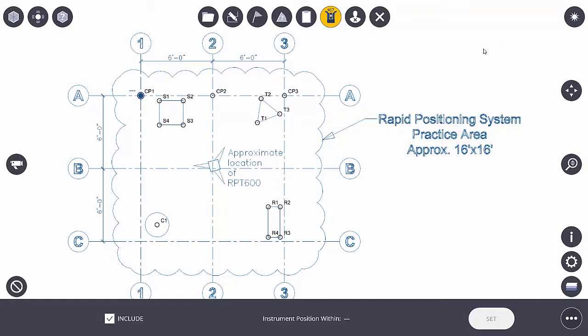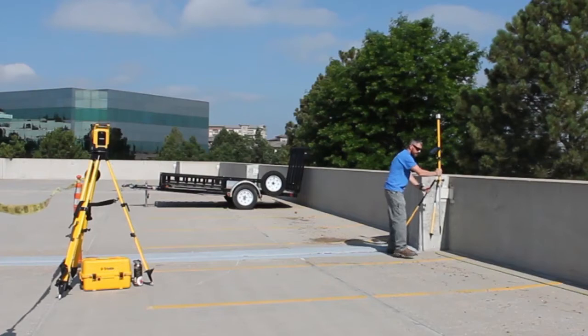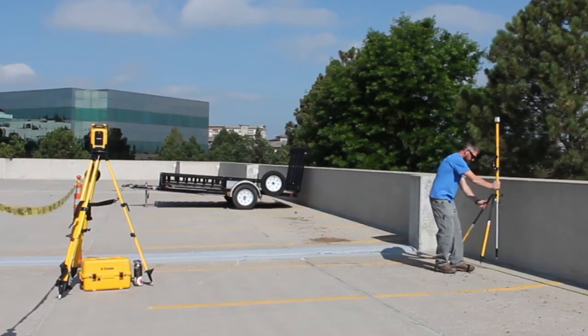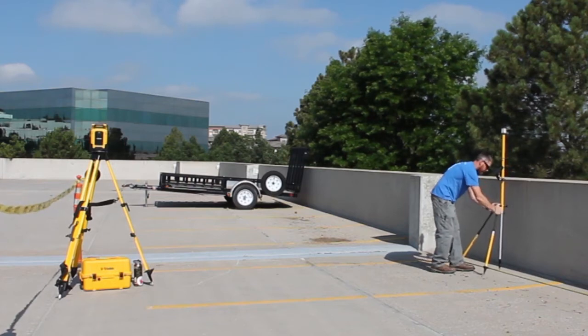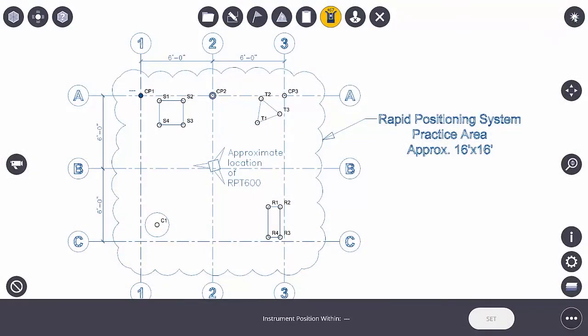My next step is to add a second control point. So I'm going to select from my screen CP2 for control point two and now I'm going to walk my prism over to control point two and physically set up on top of it with the prism. Make sure my prism is plumb and I'll press the shoot button.